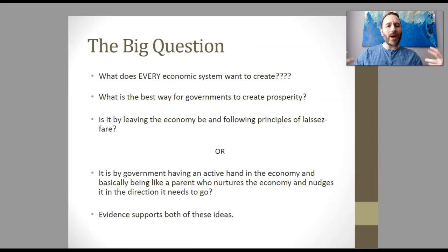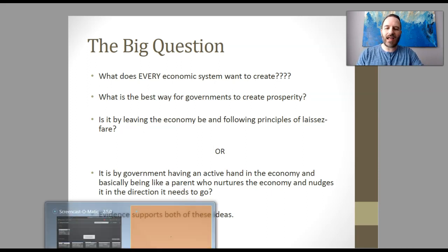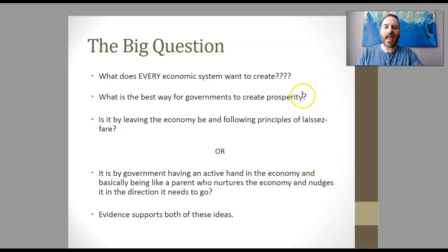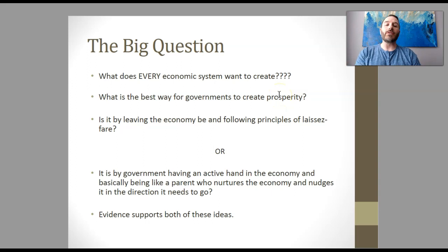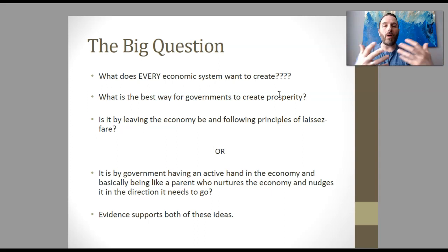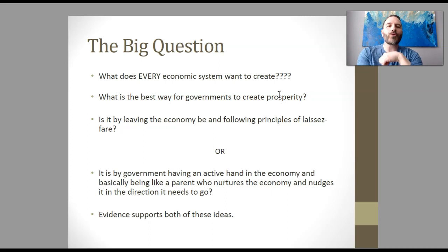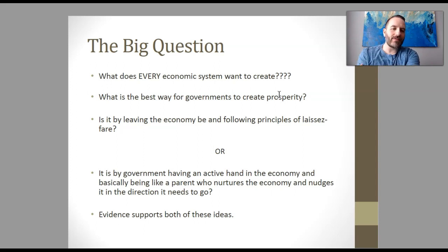So the big question: what does every economic system want to create? It wants to create prosperity. Whether it is modern liberal economics or neoconservative economics — the economics of the left or the right — it wants to create a society with wealth where people are doing well. Why? Because poverty, which is the opposite of prosperity, is fertile ground for revolution, violence, and chaos. Both ideologies want prosperity; they just go about it very differently.